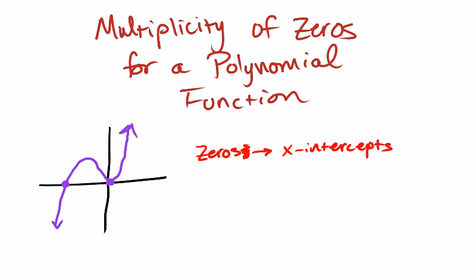Okay, and so where you see an x-intercept, we call those zeros or roots or things like that, the numbers that would cause the y-value to be zero. And so in this graph, you can see two x-intercepts.